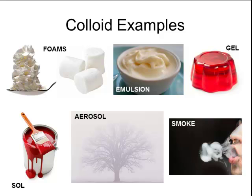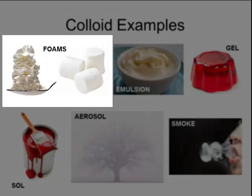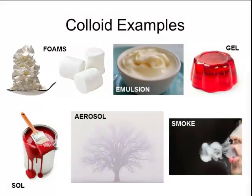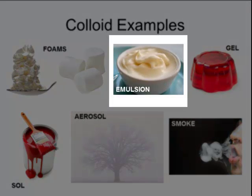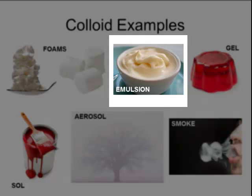There are many different kinds of colloids. The first type is called a foam. Foams are produced by taking a gas and dispersing it through a liquid, as in whipped cream or shaving cream, or dispersing that air through a solid, like marshmallows or styrofoam. An emulsion is a type of colloid in which a liquid is dispersed throughout another liquid. This occurs in mayonnaise, milk, and butter.